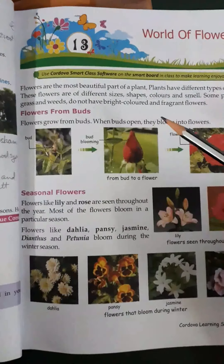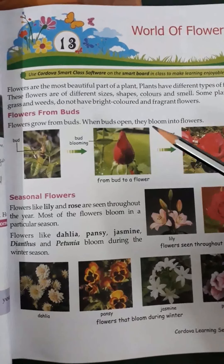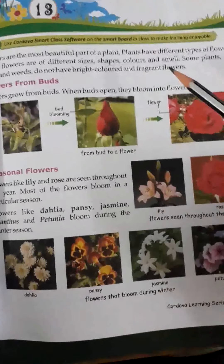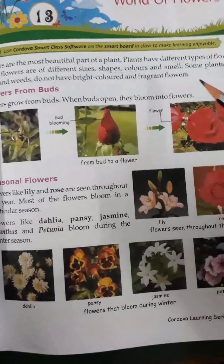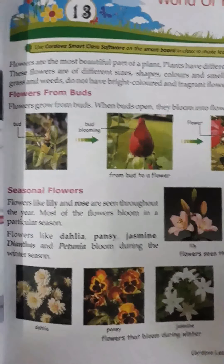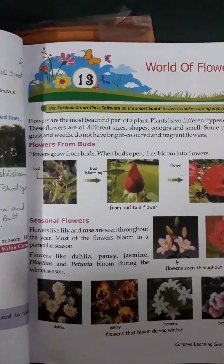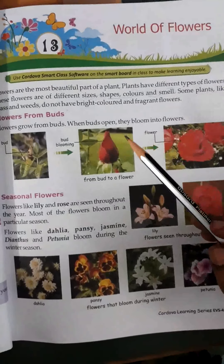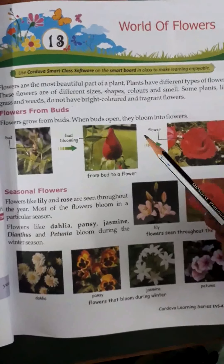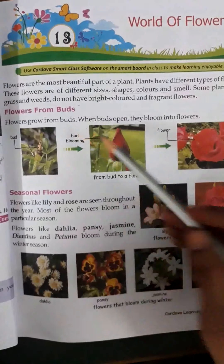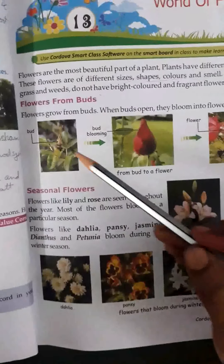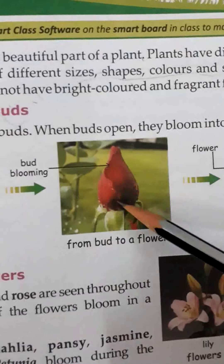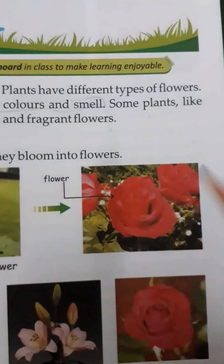We will see the different types of flowers also. These different flowers have shape, size, color, and smell. Flowers grow from buds. When buds open, they bloom into flowers. I am saying buds, not birds — you will remember 'bird' but it is B-U-D, buds. So flowers grow from buds, which come like this, then grow up and bloom into flowers.